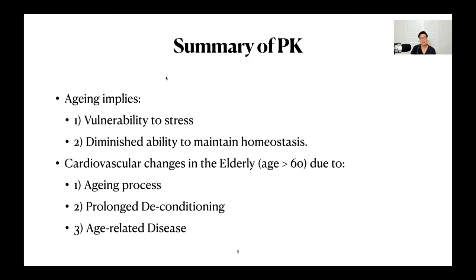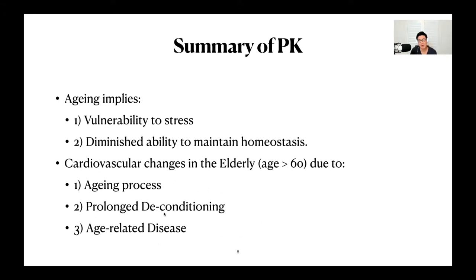This is a summary of Power and Camp. The definition: aging implies a vulnerability to stress and a diminished ability to maintain homeostasis. I quite like this definition and will bring it into the exam. Cardiovascular changes in the elderly — defined as age more than 60 — are due to: one, the aging process; two, prolonged deconditioning; and three, age-related disease. You can see that deconditioning and disease would belong to the D section. As per the examiner's report, you don't want to focus too much on the disease and deconditioning process, but we can dedicate about one-fifth of our answer to this.